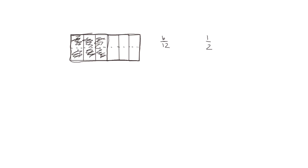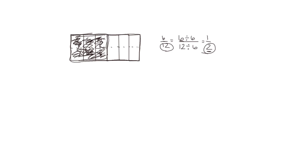In the same way as we used multiplication to decompose into smaller units, we can use division to create larger units. So if we start with six twelfths and we want to end up with halves, we would have to see if we can divide both the numerator and the denominator by six, which we can. So to go from twelfths to halves, we would divide by six. We've reduced the number of total units in the whole to two halves, and dividing the numerator by six, we've reduced the number of units that are shaded to one. So six twelfths is equivalent to one half.